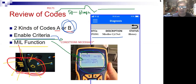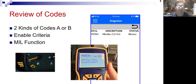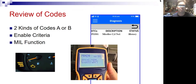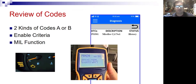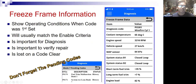So now you know about Type A and Type B codes. Most codes these days are Type B and require two trips. An example of a Type A code would be a misfire code or a fuel trim code — if you're going to get a Type A, it's usually misfire or fuel trim.